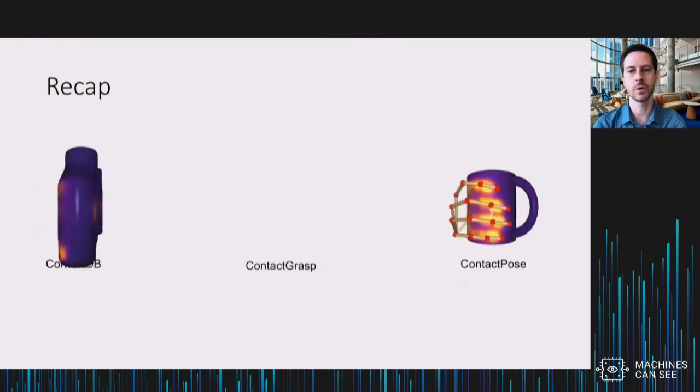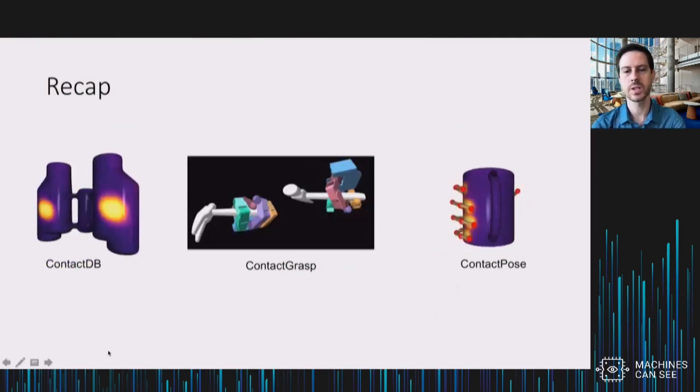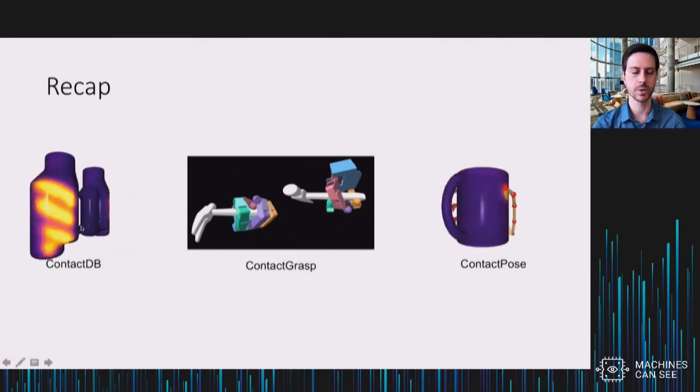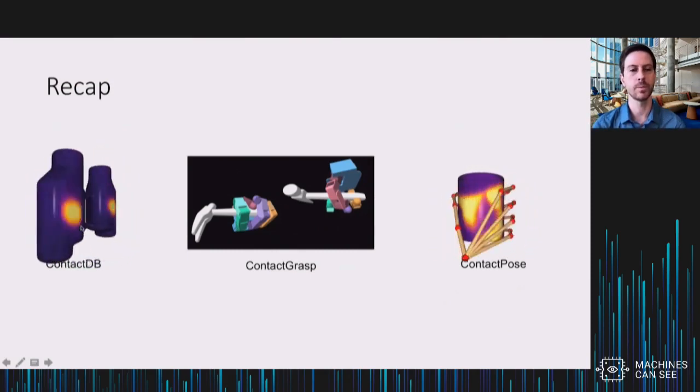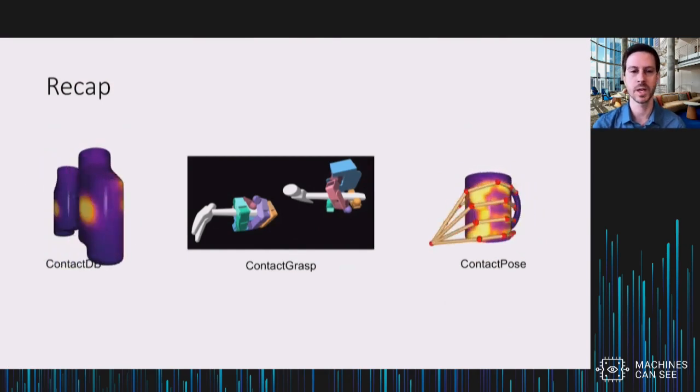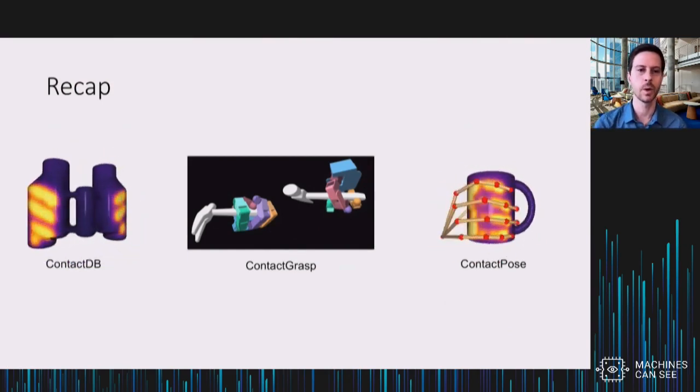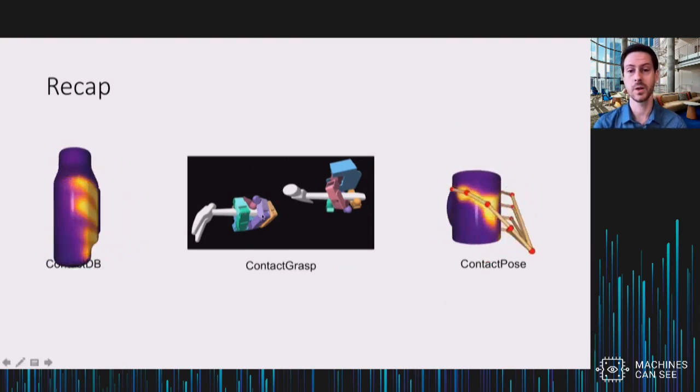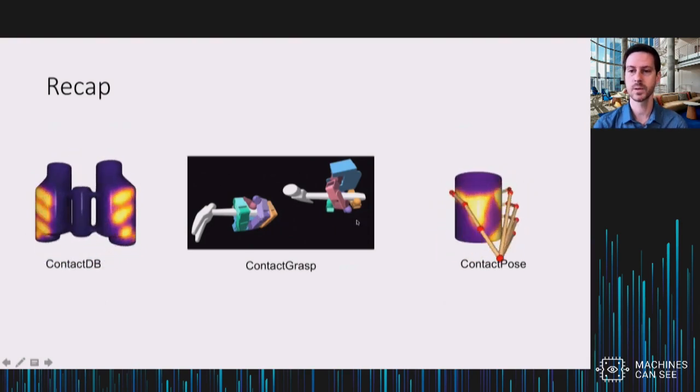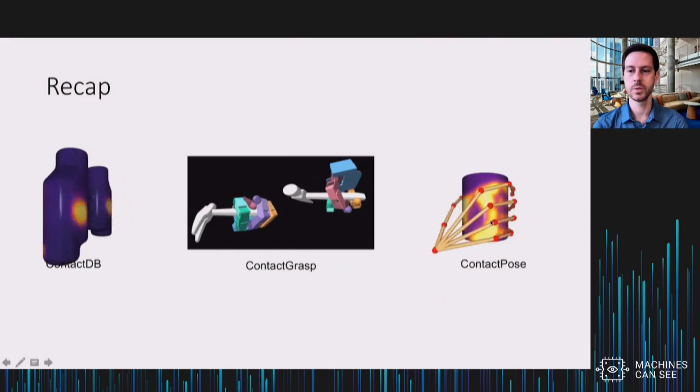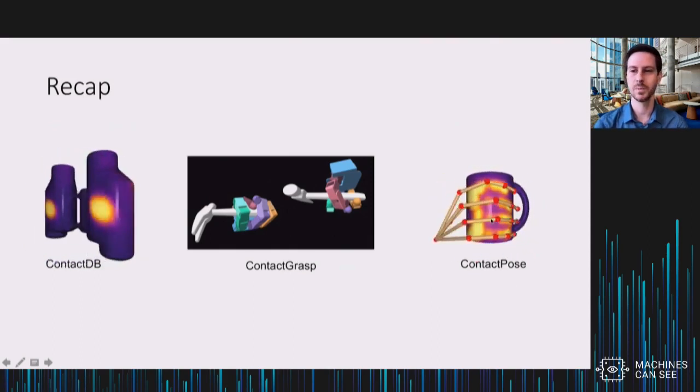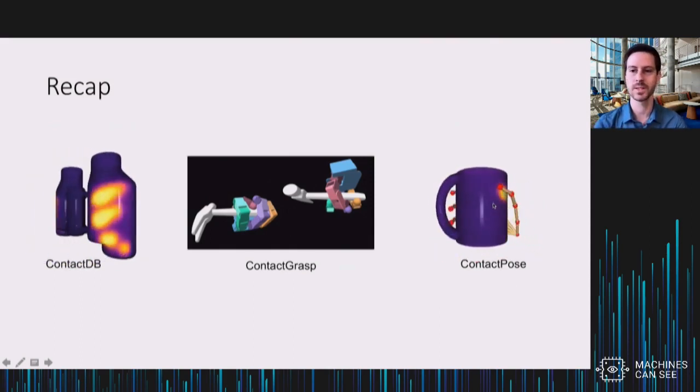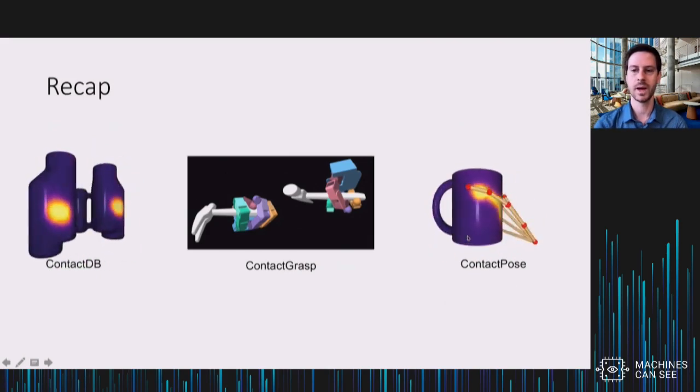So just to recap, I've shown three different projects all using thermal grasp. We started with ContactDB, which was the first work that just showed that it was possible to use thermal imaging to recognize where people had touched objects after the fact, but it didn't understand where their hands were actually posed. We showed that it is possible to use this to retarget robotic grasps. And then most recently, we've used a more complex capture setup to also capture hand pose at the same time that we're capturing the thermal after image. All right, that's the end of my talk. I guess I'm looking forward to the discussion that I'll have with you.